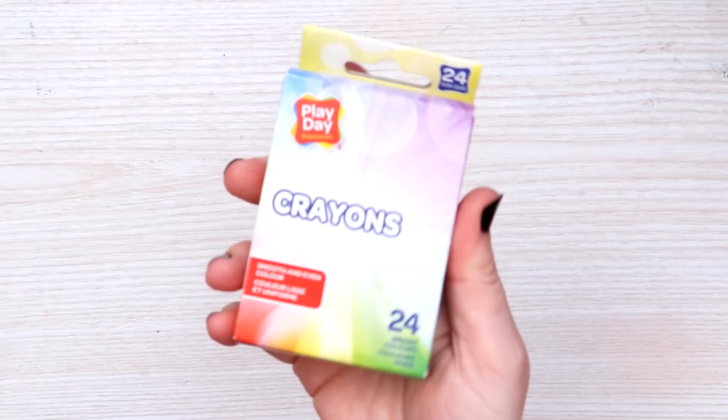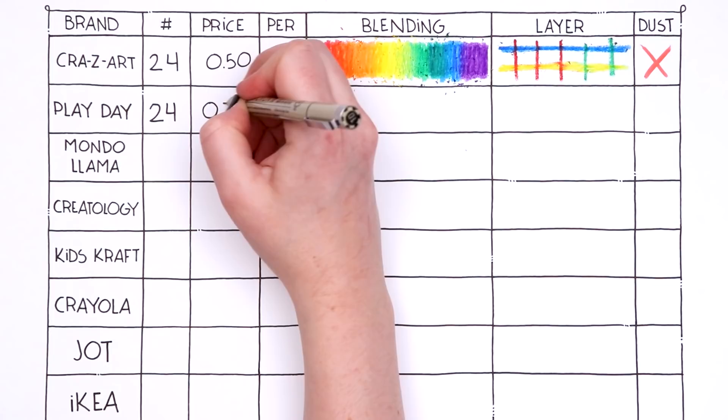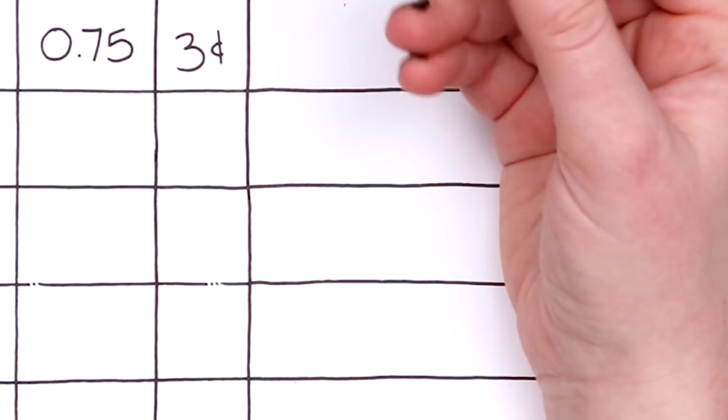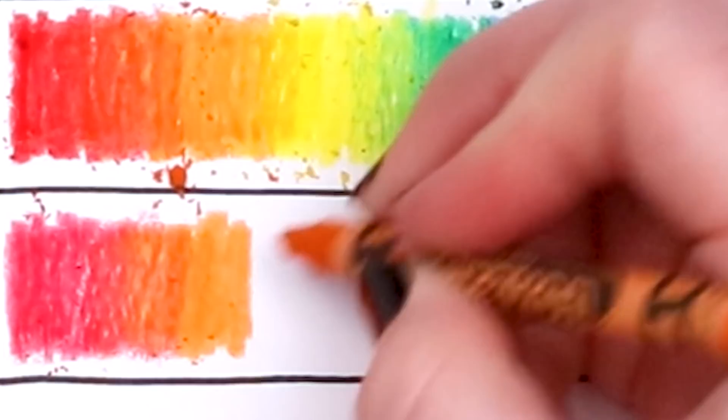Next up we have the Play Day Expressions brand, this is the Walmart brand. Again, this pack is 24 colors which brings us to a 75 cent total pack. Oh my goodness, still so cheap. 3 cents a crayon. Apparently 3 cents a crayon is too cheap to put a color on the wrapping, so we're just gonna have to guess. Is this the red? I hope so. Ooh, this one feels transparent. Definitely not as good of a quality as our 2 cent crayons. I can just feel it already. But you know what, I could be taken by surprise. Let's just see how they blend.